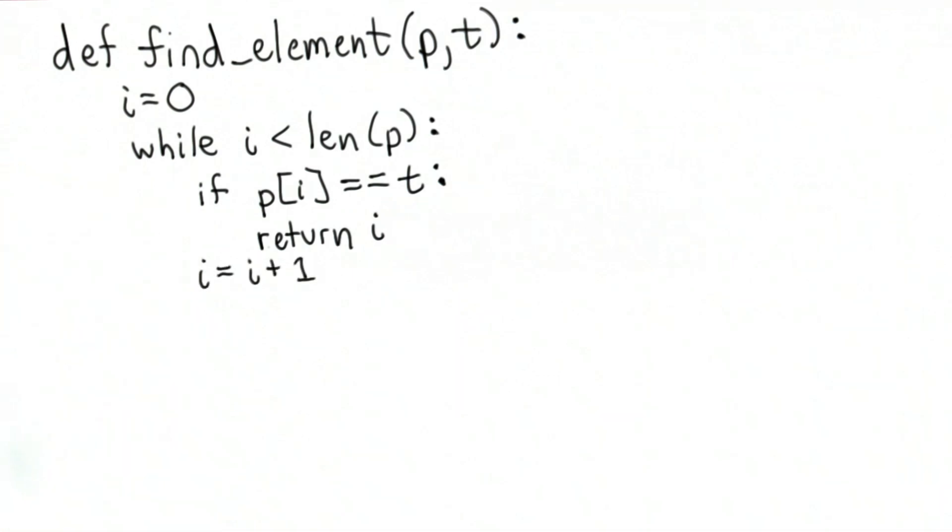The way we describe what the find element procedure should do, if the element was not found, it should return negative 1. If we get to the end of the while loop without returning, that means we've gone through the while loop for all values of i up to len of p minus 1. We didn't find any element that matches, so we should return negative 1. So that's one way to define find element.